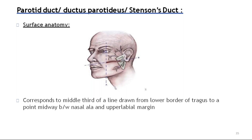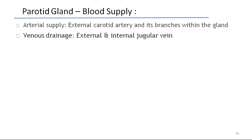The surface anatomy of the parotid duct corresponds to the middle third of a line drawn from the lower border of the tragus to a point midway between the nasal ala and upper labial margin. Arterial supply is from the external carotid artery and its branches. Venous drainage is into the external and internal jugular veins.